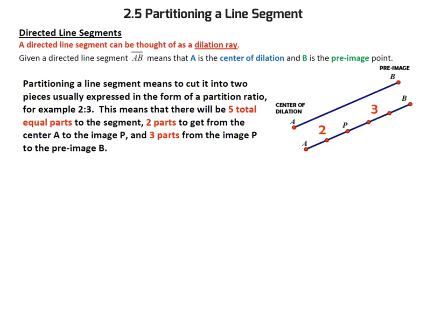We're going to look at something called partitioning a line segment. A directed line segment is basically a dilation ray, but the way it gets named actually matters. If you call it a directed line segment AB, that means A is the center of dilation and B is the pre-image point. It's starting at A and on its way towards B.